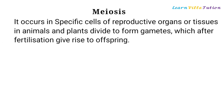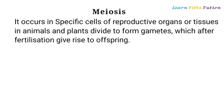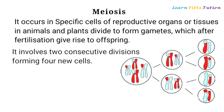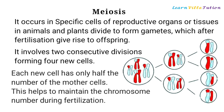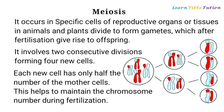Meiosis occurs in specific cells of reproductive organs or tissues in animals and plants, dividing to form gametes, which after fertilization give rise to offspring. It involves two consecutive divisions forming four new cells. Each new cell has only half the number of chromosomes of the mother cell. This helps to maintain the chromosome number during fertilization.